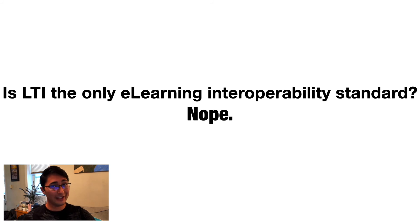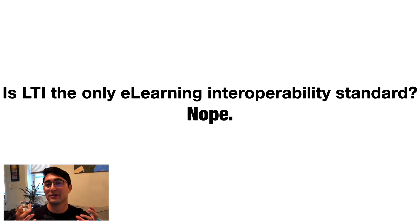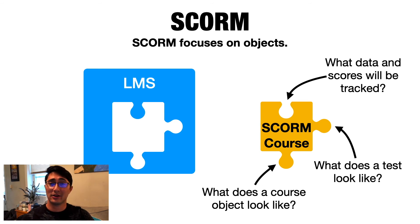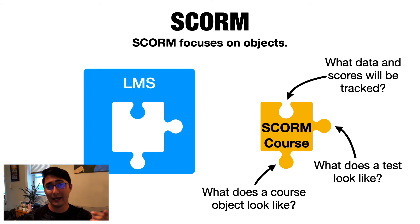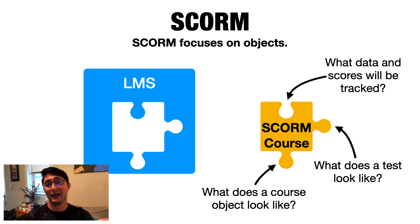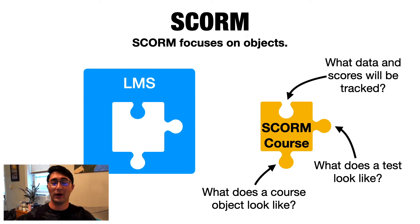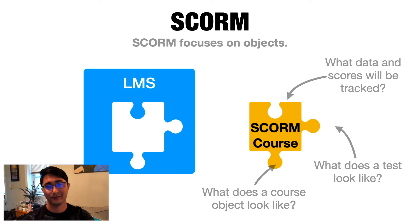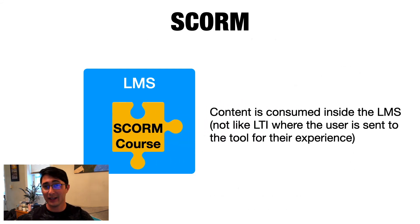So is LTI the only e-learning interoperability standard — where interoperability standard means a standard that makes two different types of technologies like an LMS and a tool fit together? The answer is no. The one I wanted to introduce today is called SCORM. The biggest picture description I can give of SCORM is that it is like LTI, except that it focuses more on objects. So again, we have an LMS, but instead of connecting a tool, you're now connecting a course — think more around content. It answers questions like: what does a course object look like, what does a test object look like, what do scores look like. All of these types of objects are defined in SCORM. So at the end of the day, the SCORM course is designed to fit into the LMS.